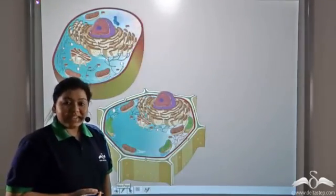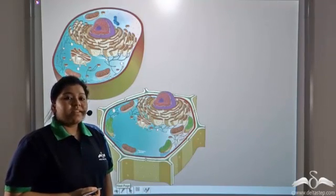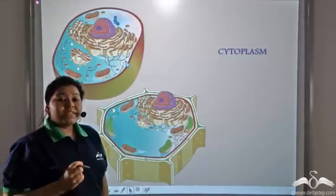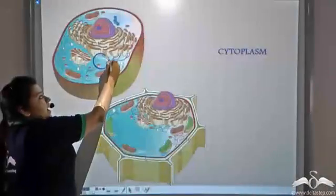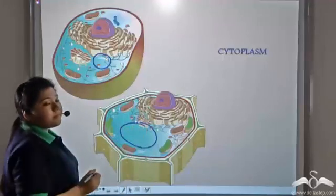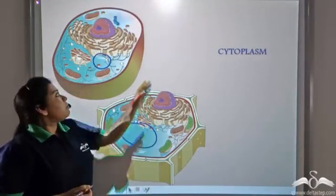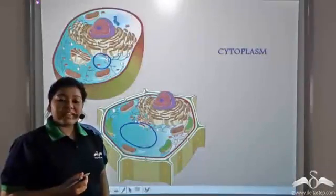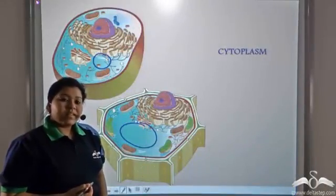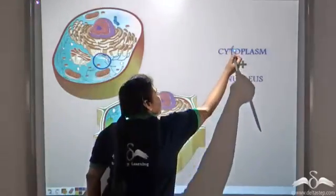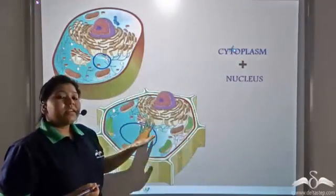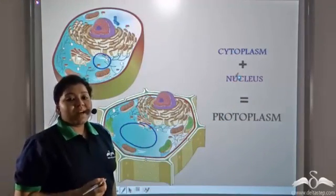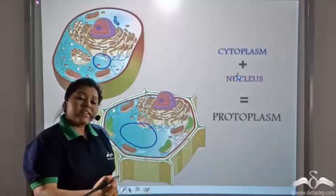So what did we study today? We studied about the cell fluid which is known as the cytoplasm. The cytoplasm is present in both the animal cell and the plant cell. We also discussed about the nucleus, which is the controlling unit of the cell. The nucleus has nucleoplasm. So cytoplasm and nucleus together are collectively known as protoplasm, which is the fluid content of the entire cell.